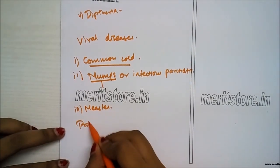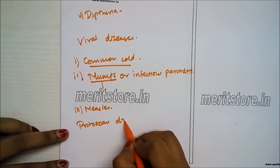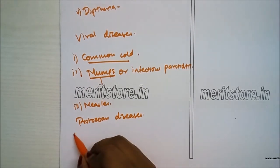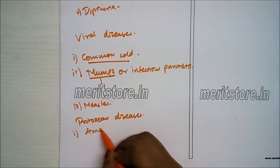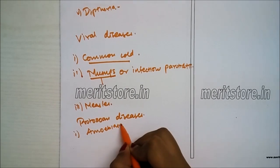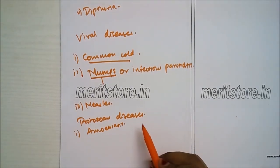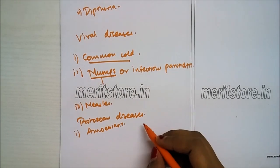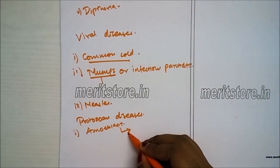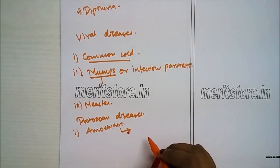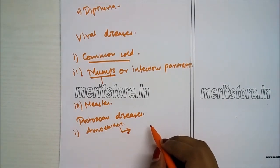Protozoan diseases: First is amoebiasis or amoebic dysentery, a protozoan infestation of the upper part of the large intestine caused by monogenetic protozoan Entamoeba histolytica. It is characterized by abdominal pain, mild diarrhea alternating with constipation, passing out of mucus, pieces of necrotic mucous membrane, and blood in feces, and feces with cysts.